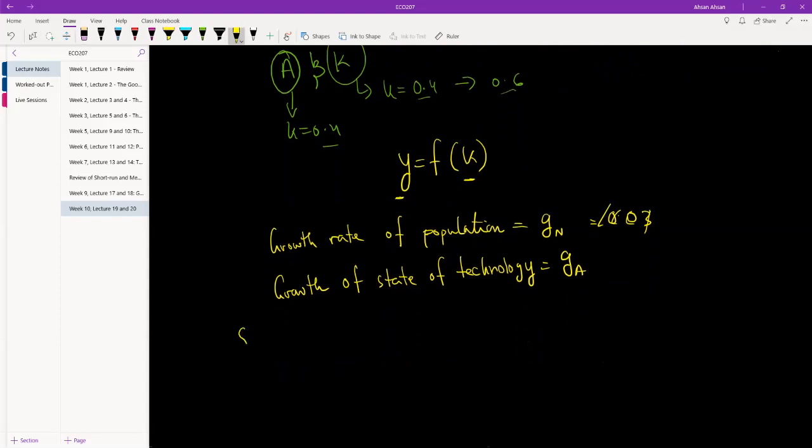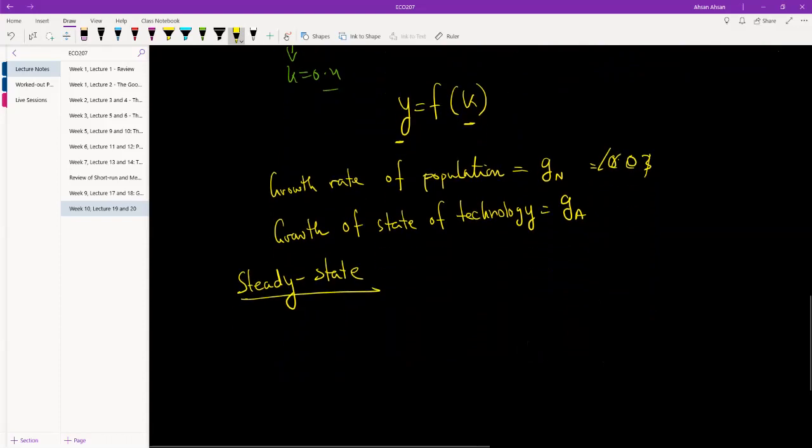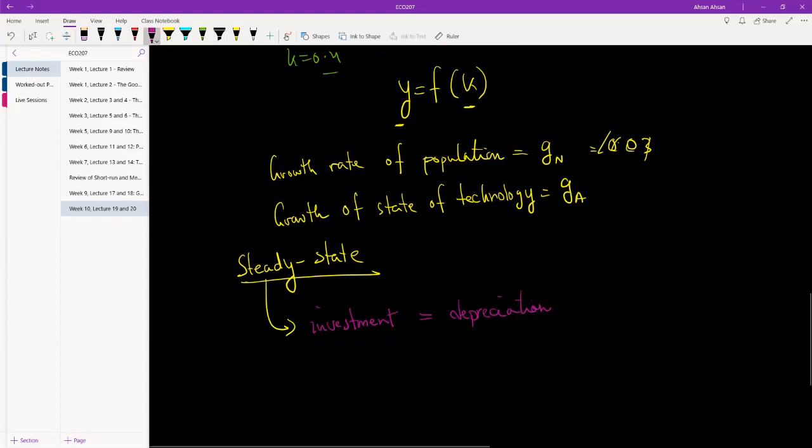Once we have these two things, let's talk about steady state. What we had seen in the previous chapter is that to get to steady state what we needed was investment in capital had to be equal to depreciation.